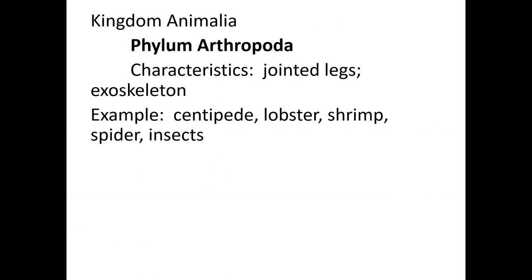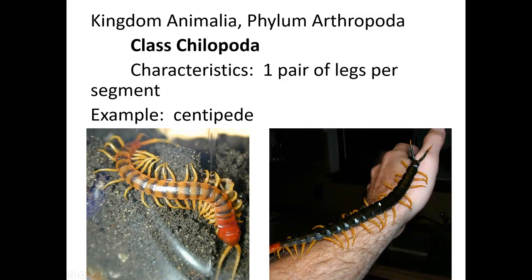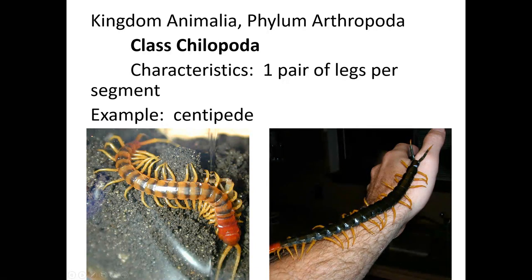Next we get to the largest phylum in terms of number of organisms and diversity — phylum Arthropoda. Arthropoda means 'jointed foot or jointed leg' because everything in this group has jointed legs. They also have an exoskeleton, unlike us — we have an endoskeleton. We start with centipedes, in class Chilopoda: one pair of legs per segment. Millipedes get two pairs of legs per segment. Some centipedes in our area are venomous — it's described as analogous to a bee sting.